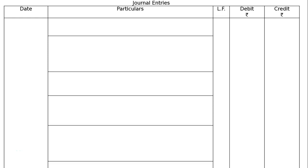This is question 9. Rohit, Kunal, and Sarthak are partners in a firm. They decided to dissolve their firm. Pass necessary journal entries for the following after various assets other than cash and bank, and the third-party liabilities have been transferred to the Realization Account.